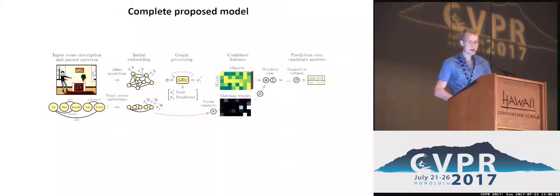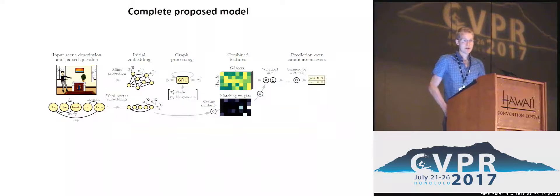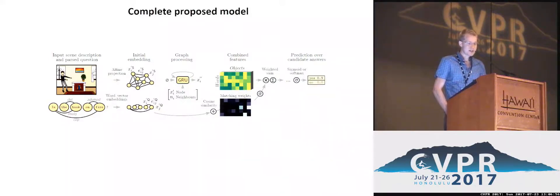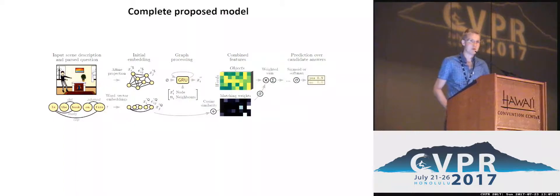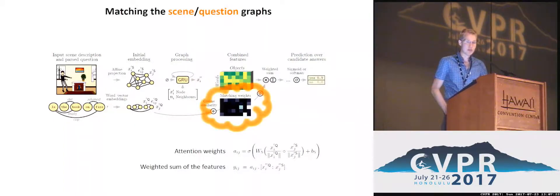Looking more closely at the neural network: in the pre-processing stage we transform the question and the scene into two disjoint graphs. We then process those graphs separately with a mechanism similar to other recent works on neural networks for graphs. Each node is associated with a recurrent unit, implemented as a GRU. These units propagate information over the graphs by iterating over a fixed set of iterations, propagating information from neighbors and updating the representation of each node.